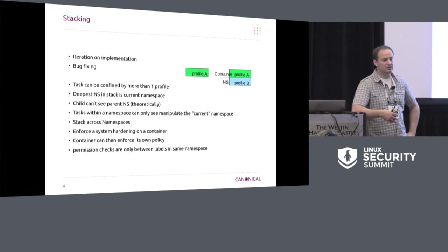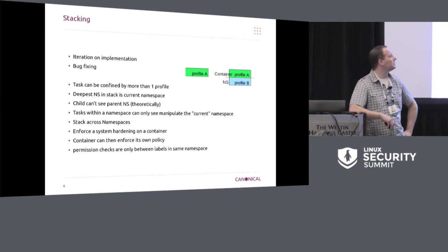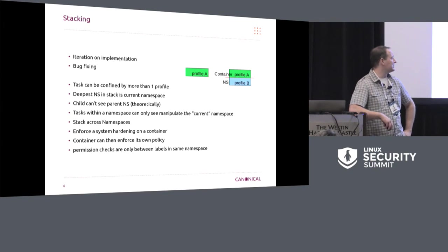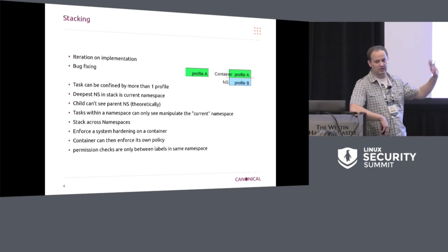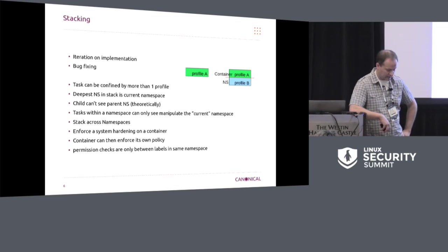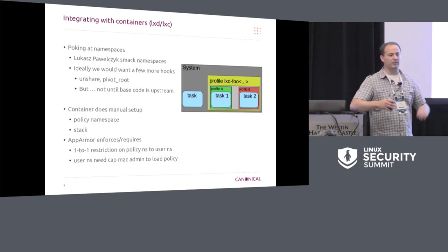Each task has a concept of what its current namespace is, and this is part of how we determine where tasks can load policy. The child can't see the parent namespace — it just thinks its namespace is the current or root. That's where they can manipulate things if they have sufficient permissions. We use CAPMAC_ADMIN in the namespace, so if you're in a user namespace you have to have the proper permissions. We spent a lot of time fuzzing our interfaces and hardening them against possible attacks. When you do inter-task permission checks, it's between the labeling within a namespace, so when you have a stack with multiple namespaces, you're only checking between the tasks' labelings within that namespace set — they're treated almost completely independently at the policy level.